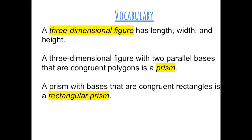A three-dimensional figure has length, width, and height. A three-dimensional figure with two parallel bases that are congruent polygons is a prism. A prism with bases that are congruent rectangles is a rectangular prism.